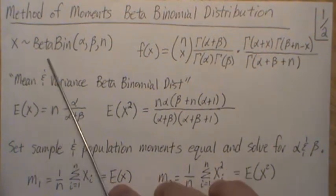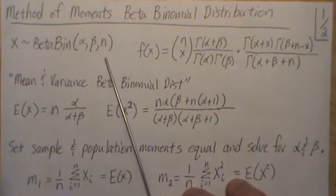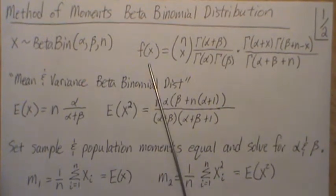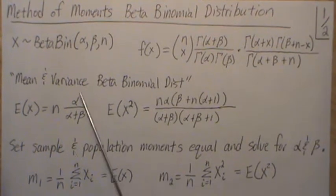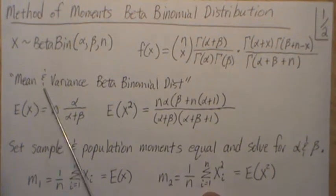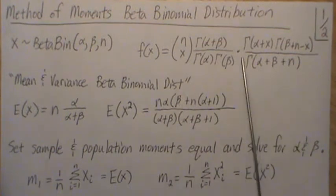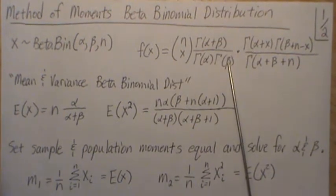If we let x be a beta binomial with parameters alpha, beta, and n, then the probability mass function is this. I'm going to pass you off to a video that I call the mean and the variance of a beta binomial distribution, where we derive this and we talk about it.